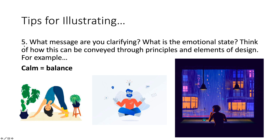Tip number five: what message are you clarifying? What is the emotional state? Think of how this can be conveyed through principles and elements of design. For example, calm equals balance. If you want to create an image that feels really calm, remember to use balance. This illustration uses symmetry — he's doing yoga or meditating, he's very calm, with symmetrical composition and calm colors. Another illustration has two plants on either side and she's folded in half — again, some symmetry. A third one has chaos outside with rain and people scrambling, yet the overall mood still has calmness through symmetry of lights and soft colors.